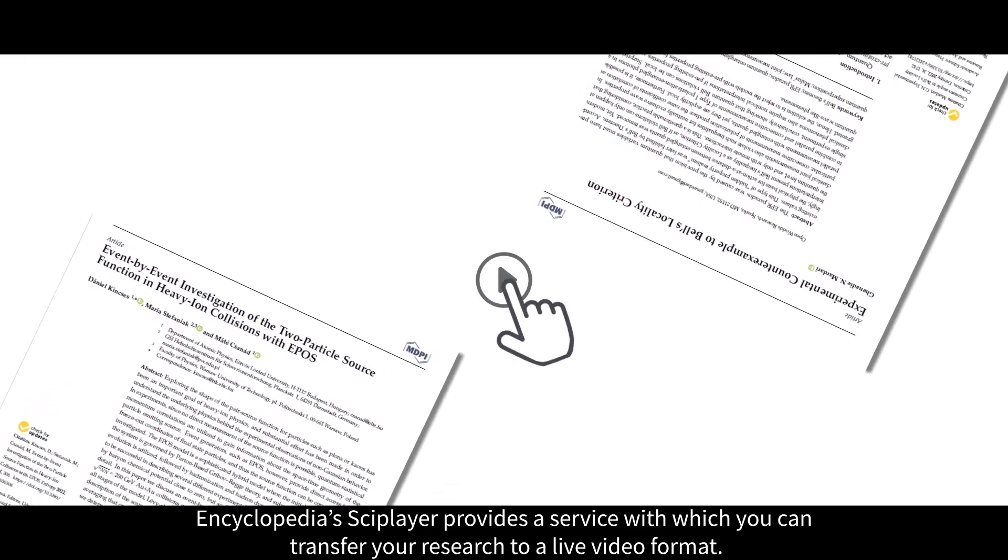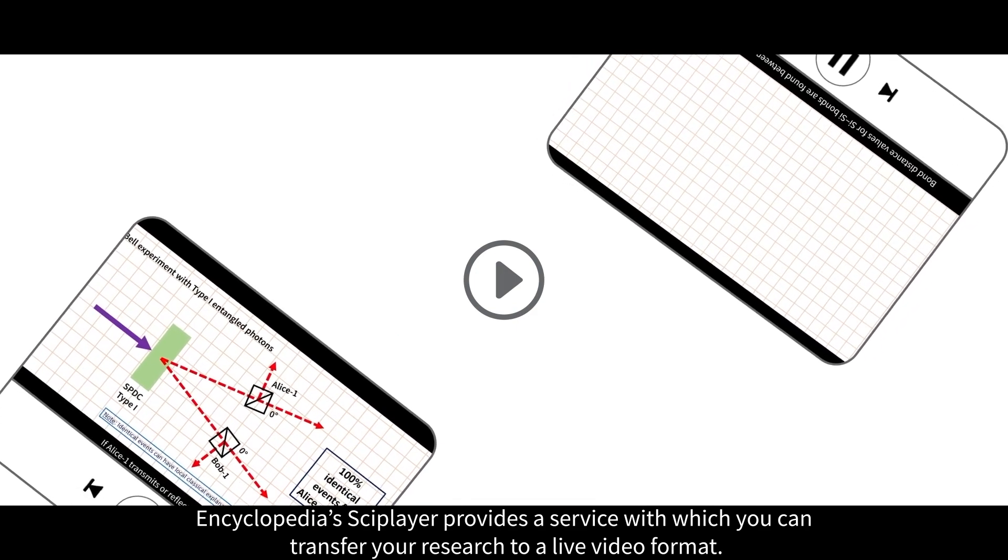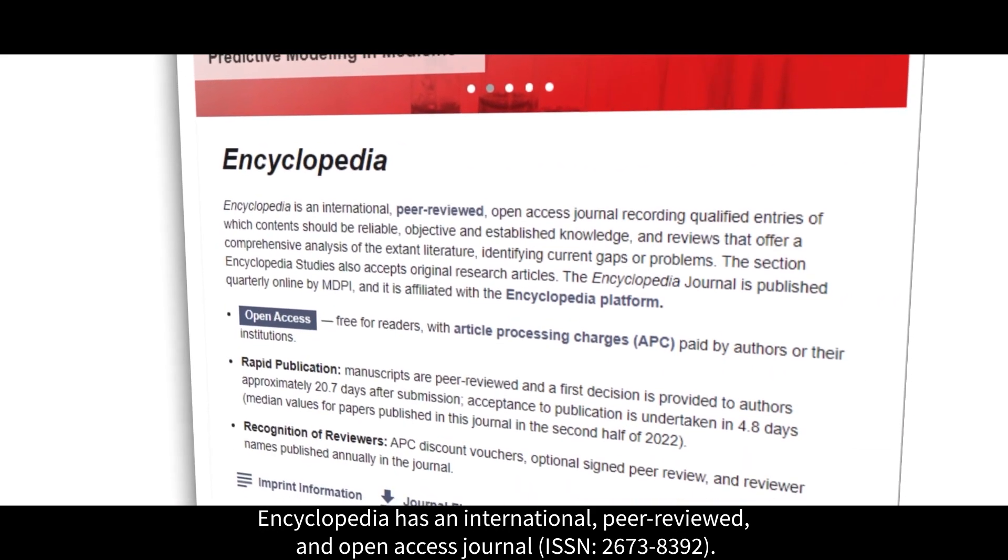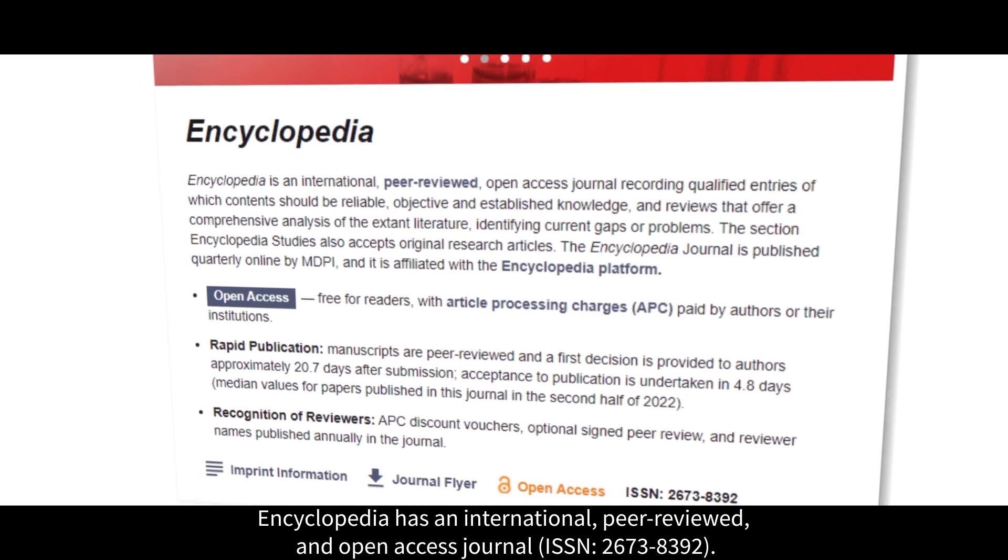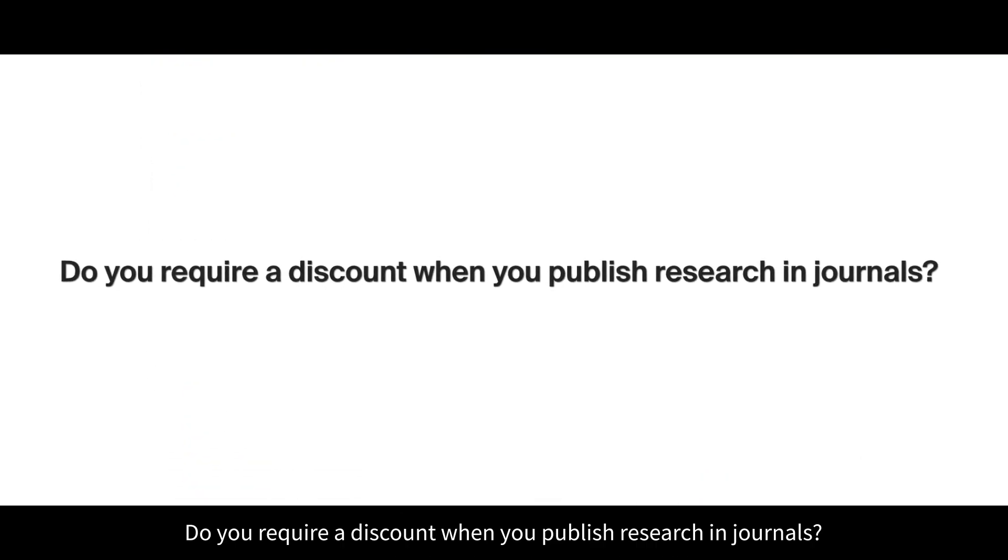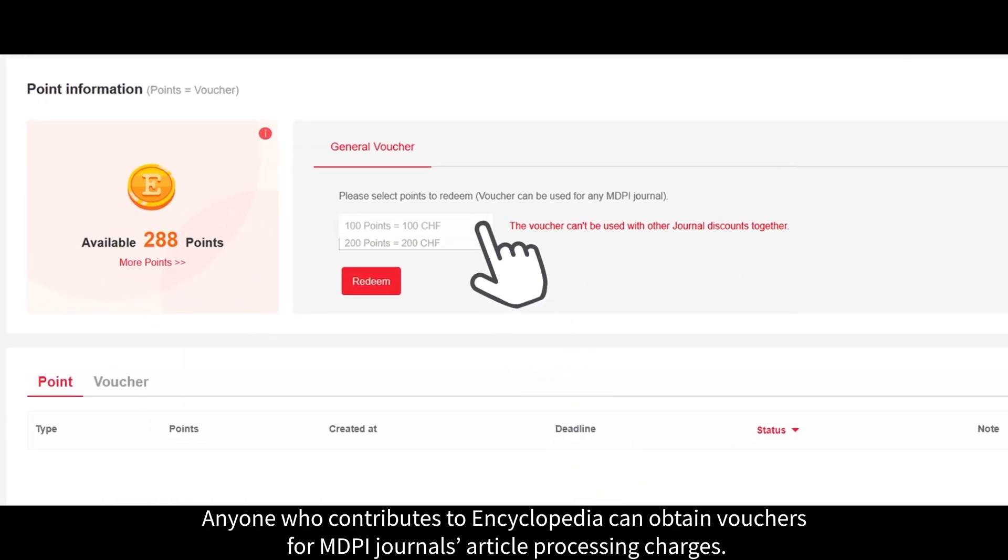Encyclopedia SciPlayer provides a service with which you can transfer your research to a live video format. Do you want to publish a new paper? Encyclopedia has an international peer-reviewed and open access journal. Do you require a discount when you publish research in journals? Anyone who contributes to Encyclopedia can obtain vouchers for MDPI journals' article processing charges.